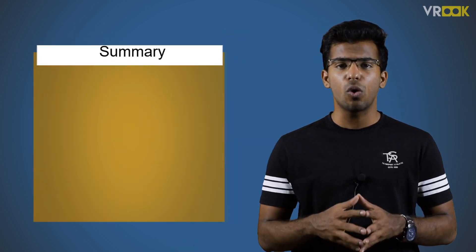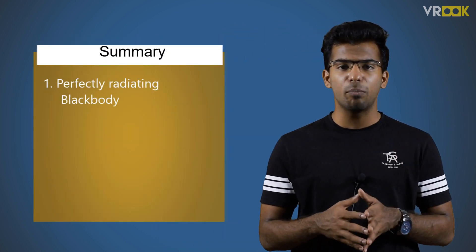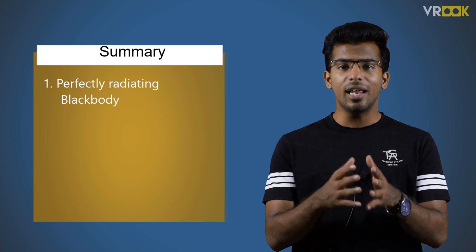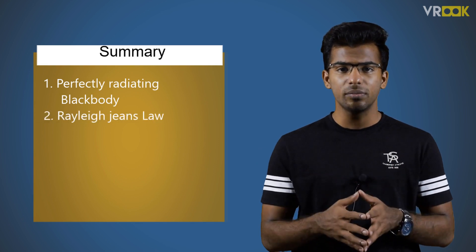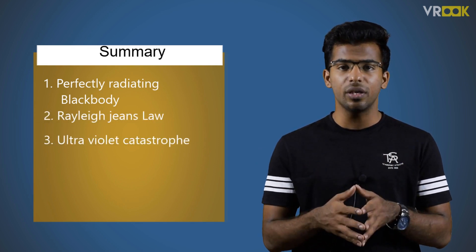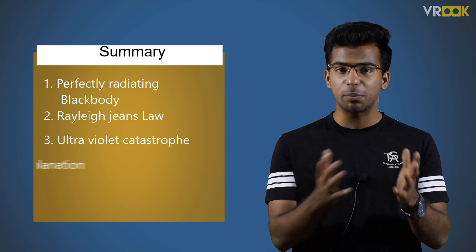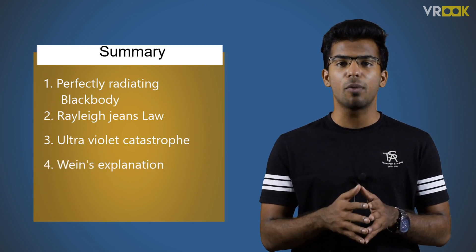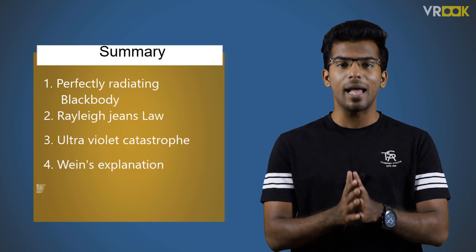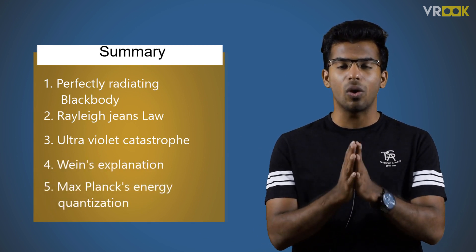To sum up, we learnt about a perfectly radiating black body, Rayleigh-Jean's law, the ultraviolet catastrophe, and Wien's explanation. Finally, we learnt about Max Planck's energy quantization. In our next video, we learn about Planck's law. See you there.